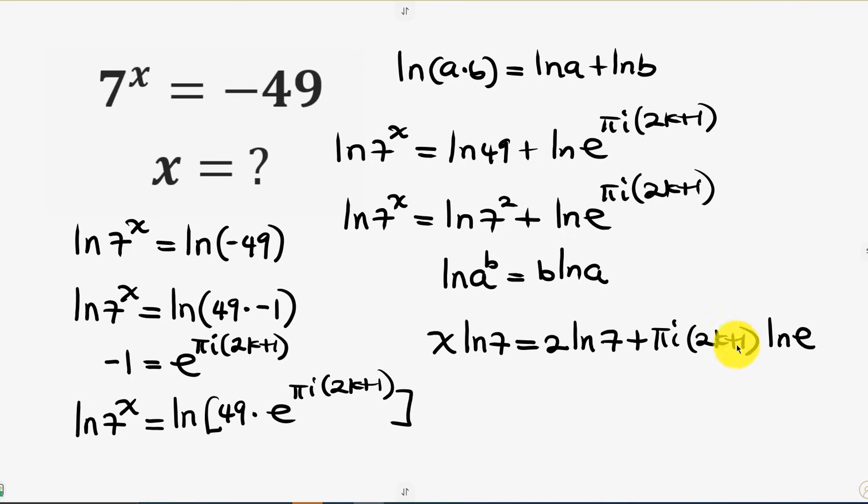Now to get the value of x, we divide through by ln of 7. So I divide this by ln of 7, this by ln of 7, and this by ln of 7.